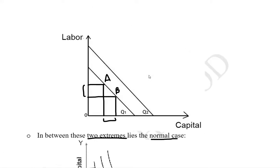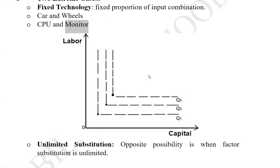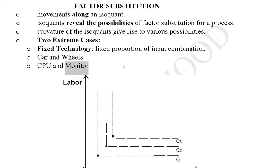This is how the substitution ability between the labor and capital or factors of production can happen in these three cases, out of which two were the extreme cases and one was the usual case that is usually assumed and used in our analysis. Thank you.